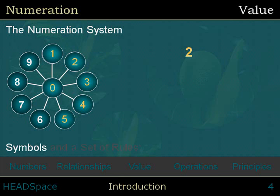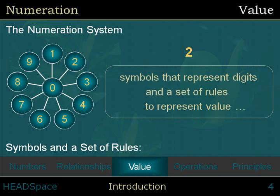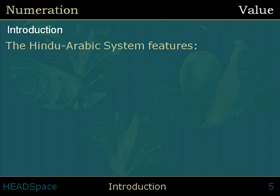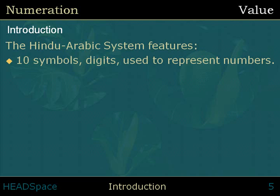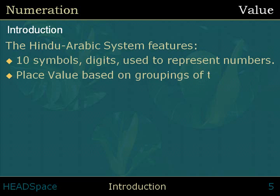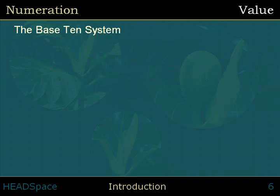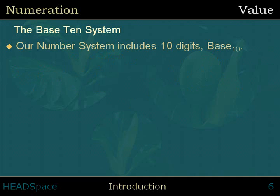The numeration system includes symbols that represent digits and a set of rules to represent value using numbers. The Hindu-Arabic system of numeration, otherwise called the Western system, features 10 symbols used to represent numbers, with place value based on groupings of 10. It includes a symbol for zero — the absence of anything — making it a base 10 system.